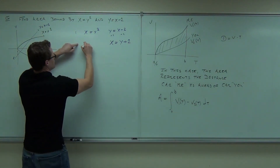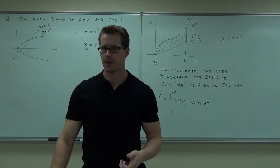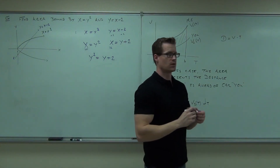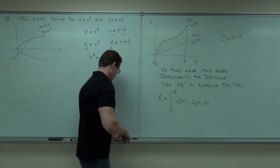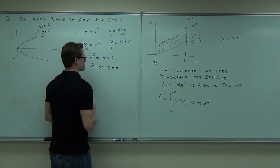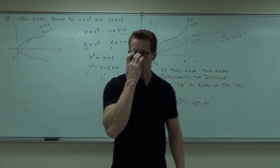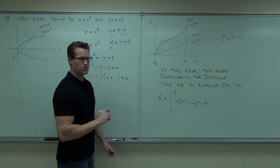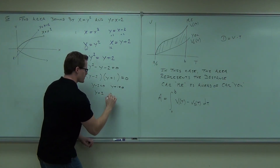Now I have x = y² and x = y + 2. Setting them equal: y² = y + 2, which gives a quadratic in y. Get everything on one side and factor. Hopefully it factors — it's kind of a pain if it doesn't. Factoring gives (y − 2)(y + 1) = 0, so y − 2 = 0 and y + 1 = 0, giving y = 2 and y = −1.